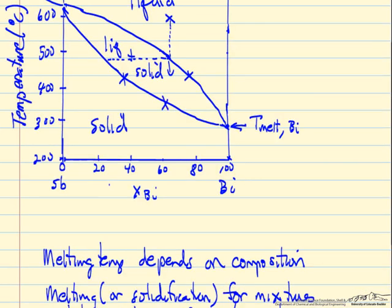Eventually we're going to have all solid, and then we're back to the same composition. When we're in between here, how much solid, how much liquid we have is determined by the lever rule, which is described in another video.